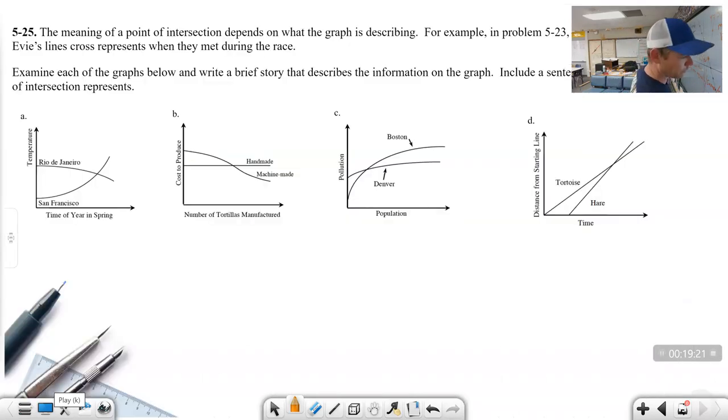Now we have one more problem. The meaning of point of intersection depends on the graph it is describing. For example, in the previous problem, 5-23, with the Iditarod sled dog race, the point of intersection is when Joila and Evie met because it was the same distance, same time. That was the point of intersection there. Then there was another point of intersection. At what point did Joila cross the finish line? The finish line and Joila crossed at 230 hours and 1,100 miles. That was a point of intersection.